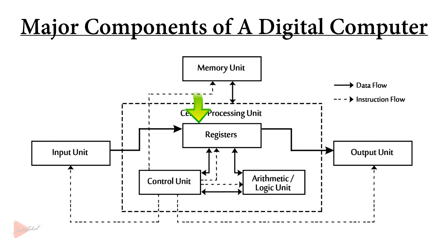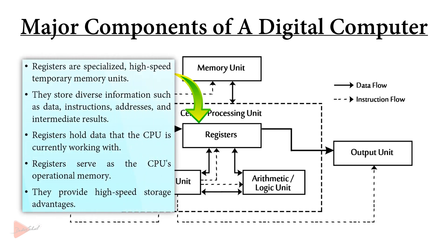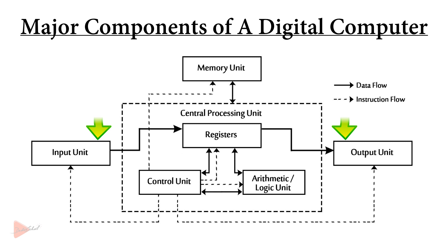Now let's talk about registers. Registers are special-purpose, high-speed temporary memory units capable of storing diverse information such as data, instructions, addresses, and intermediate calculation results. Essentially, they house the data that the CPU is presently engaged with. Registers function as the CPU's operational memory, serving as a special additional storage location that offers the advantage of speed.